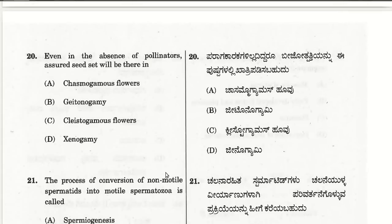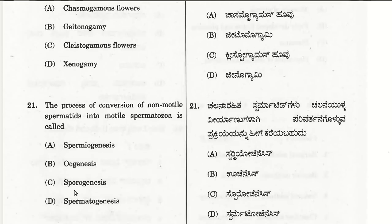The twentieth question: even in the absence of pollinators, assured seed set will occur in what type of flowers? The answer is cleistogamous flowers, which never bloom and undergo self-pollination. So they do not require any pollinators. In cleistogamous flowers, self-pollination or autogamy occurs, and seed set is assured. C is the answer for the twentieth question.